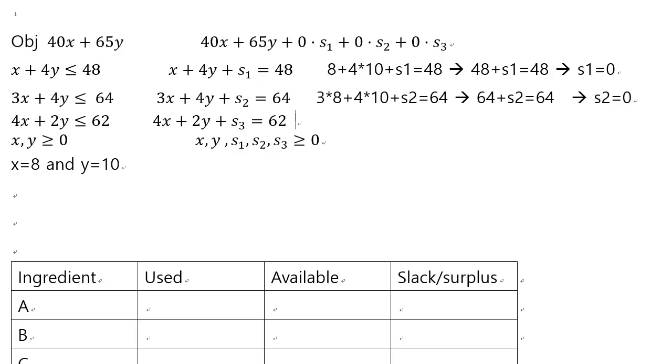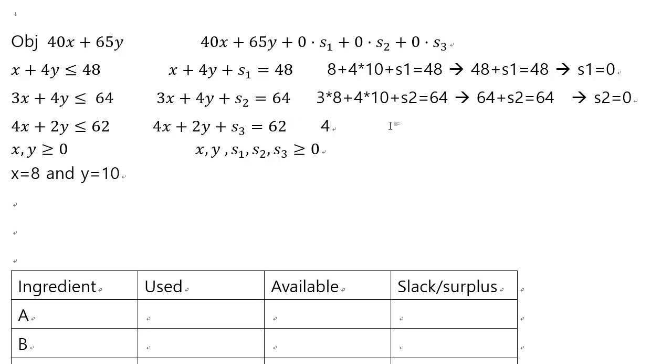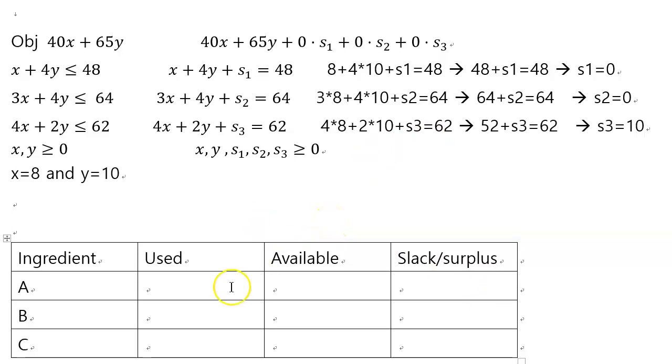The first two slack variables are 0. And then 4 times 8 plus 2 times 10 plus s3 must be equal to 62. This time we get 32. 2 times 10 is 20. 20 plus 32 is 52 plus s3 equals 62. So if we subtract 52 from both sides, you get s3 must equal 10.